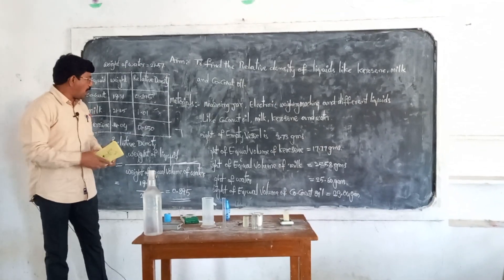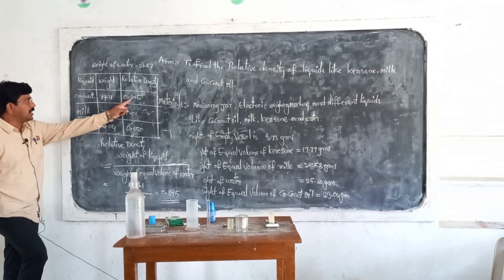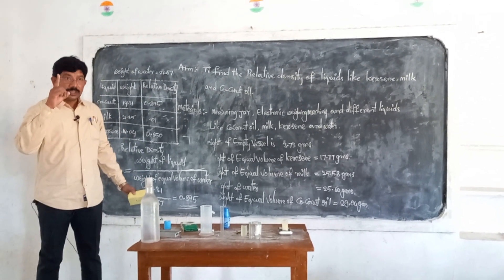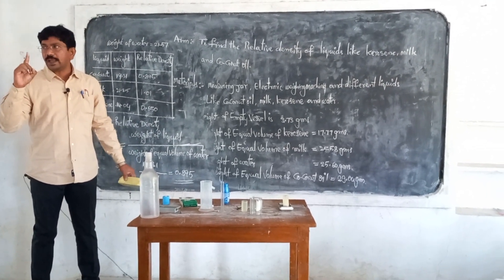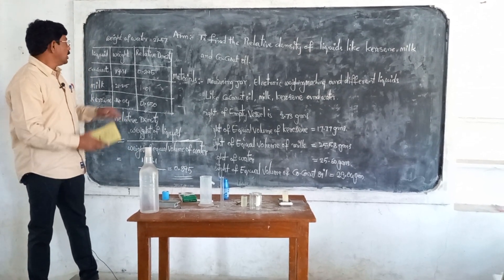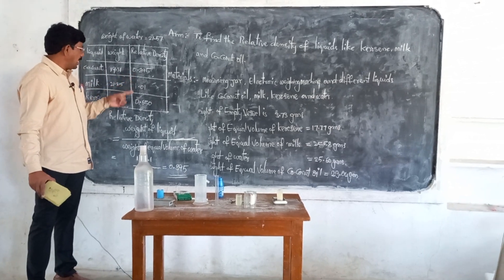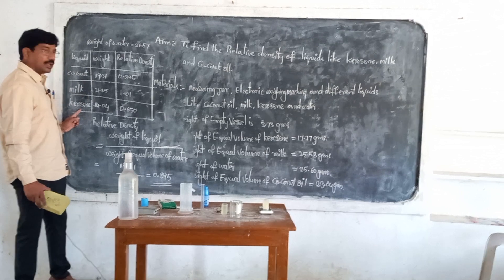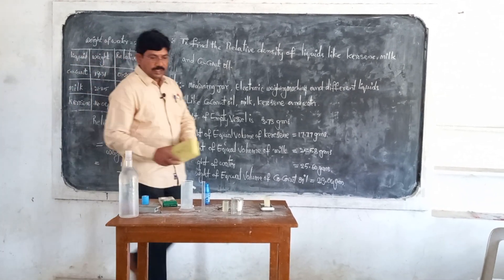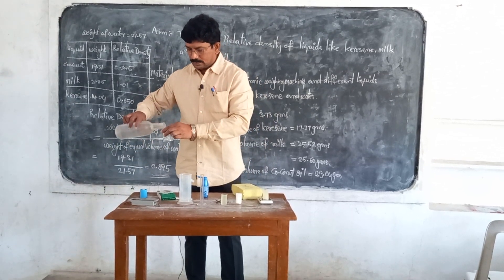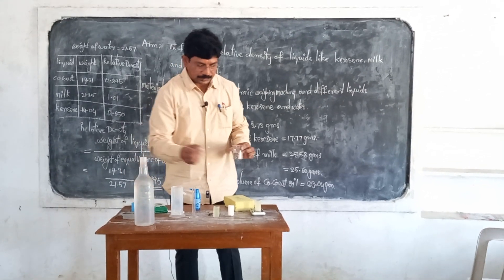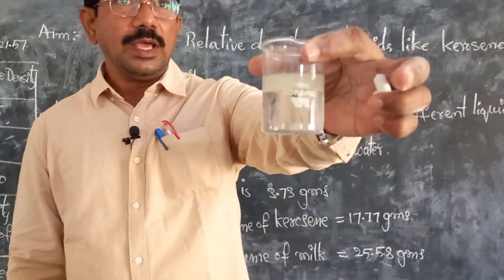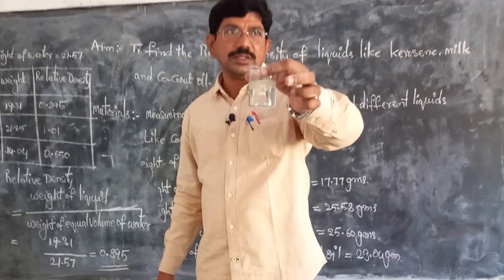There are no units for relative density. The values 0.895 and 0.650 are less than the density of water, which is 1. Coconut oil and kerosene float on water because their density is less than the density of water. Observe this carefully — it is floating because their density is less than water.